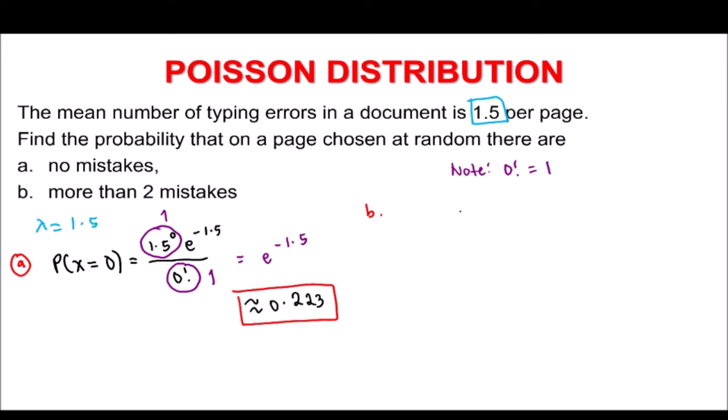For part B, the probability of obtaining more than 2 mistakes means x = 3, 4, 5, and so on. In the Poisson distribution there is no end point, so as the random value increases the probability approaches 0. It would be a challenge to list all numbers greater than 2, so we use the complement: the complement of more than 2 is less than or equal to 2. Therefore P(x > 2) = 1 − P(x ≤ 2).